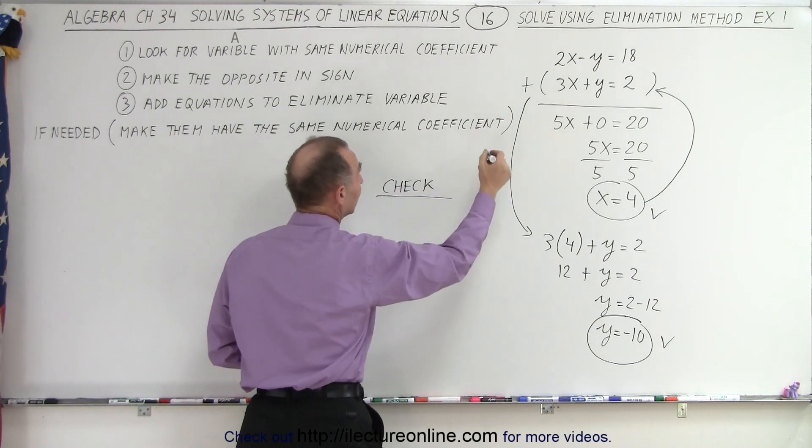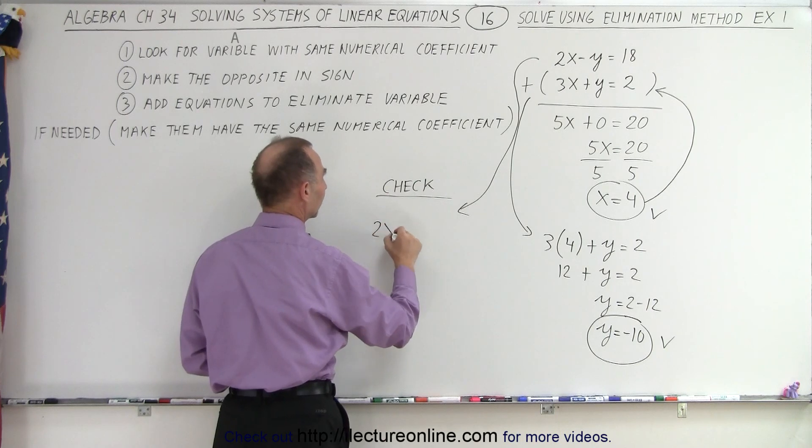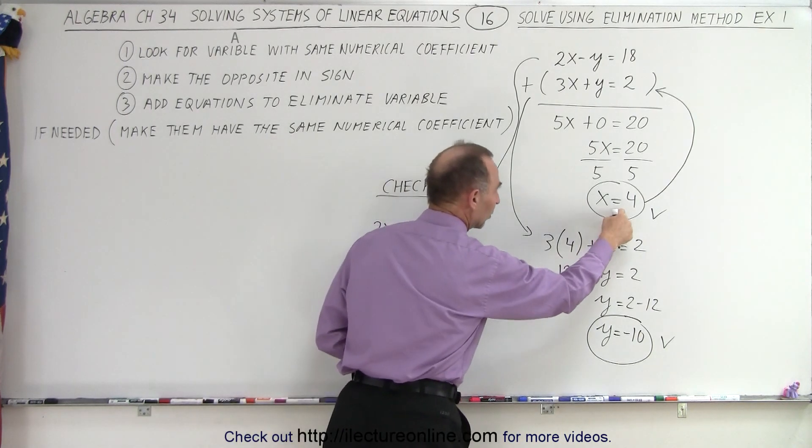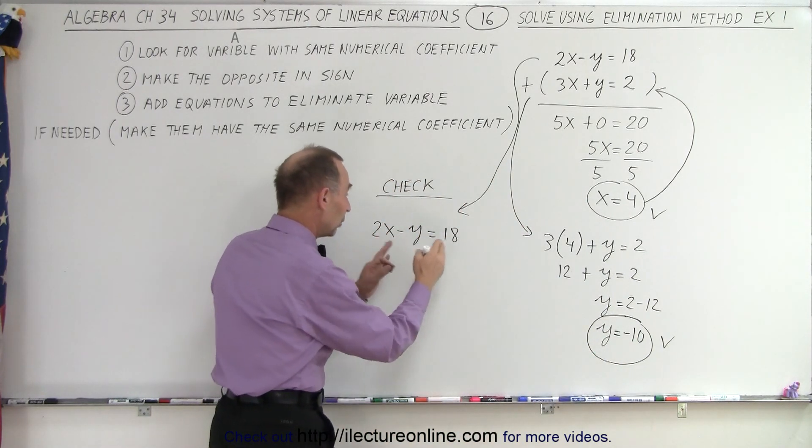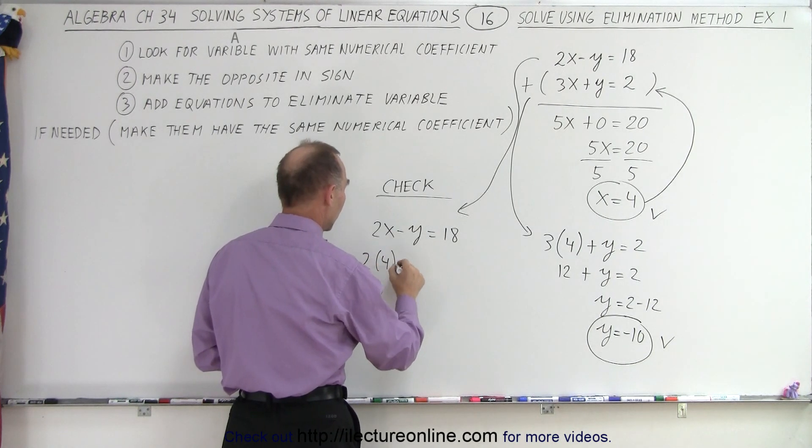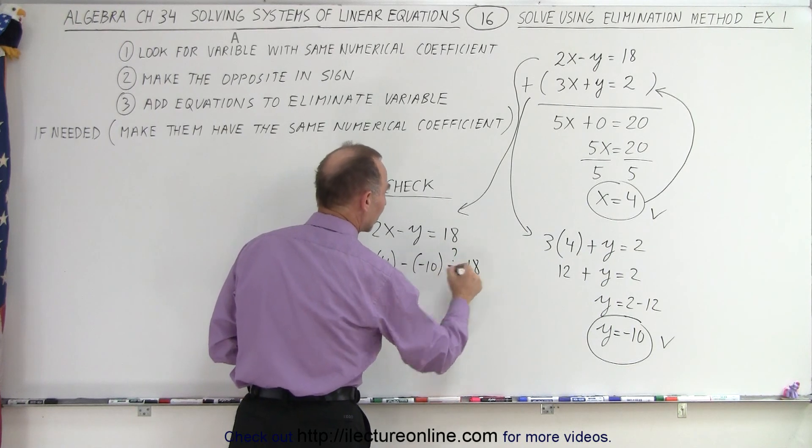And so we take the other equation, which we didn't use to find the value for y. So we get 2x minus y equals 18. And now we plug x equals 4 and y equals negative 10 to see if the left side will equal the right side. So we get 2 times 4 minus negative 10. Is that equal to 18?